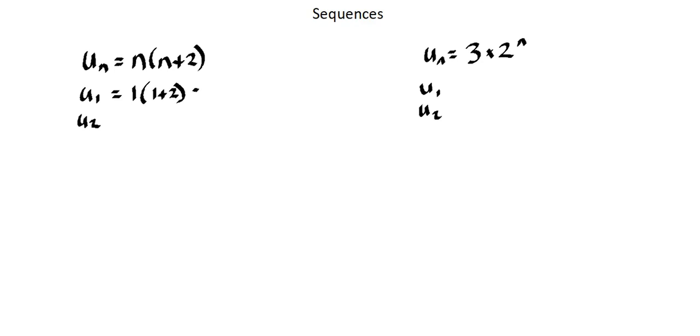And for u2, we replace the n with 2. 2 times 2 plus 2, 2 times 4 equals 8. Those are the first two terms of the first sequence.